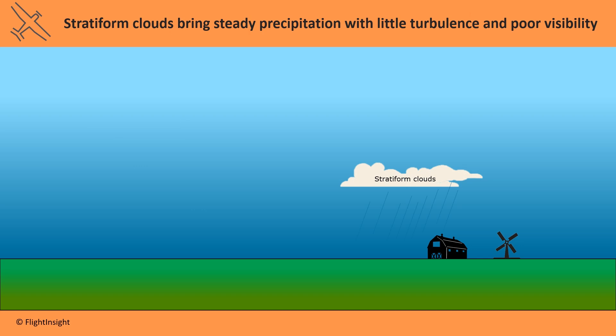Stratiform clouds bring steady precipitation that may last all day or longer with little turbulence. Because air is trapped below a certain level, visibility tends to be poorer in stable air with stratiform clouds.